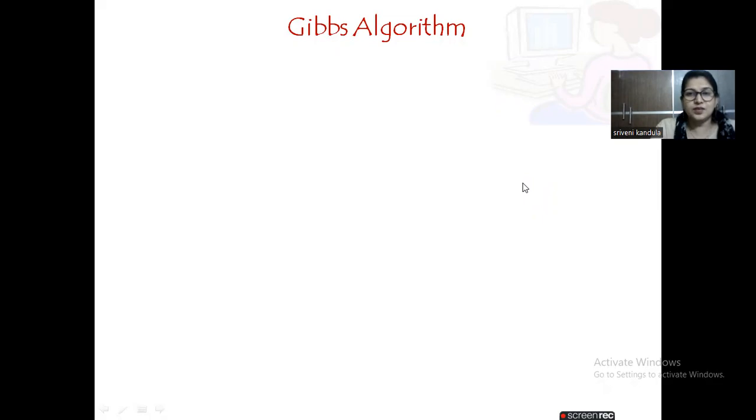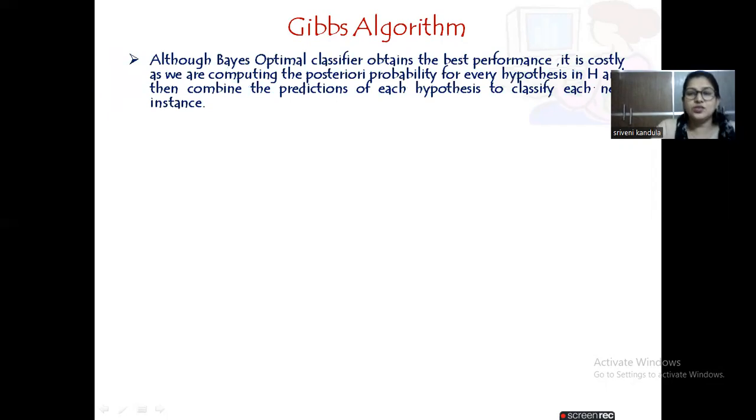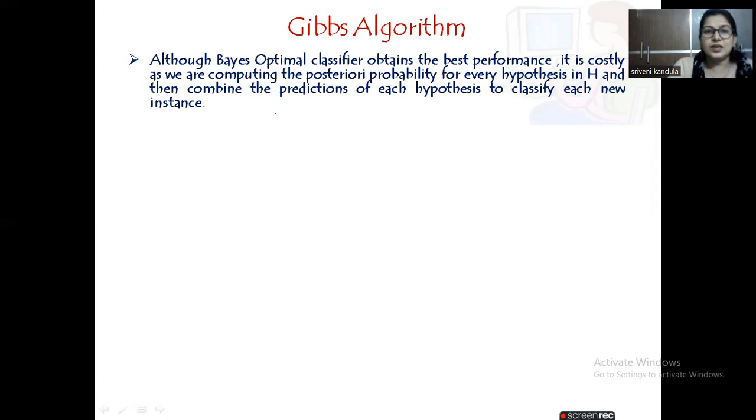The Gibbs algorithm is an extension or an alternative to the Bayes Optimal Classifier. The reason for taking this alternative is that the Bayes Optimal Classifier obtains the best performance. We saw this in the last example, but it is costly.